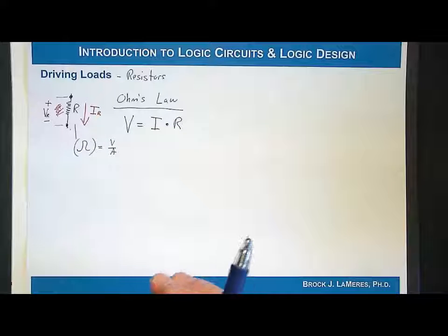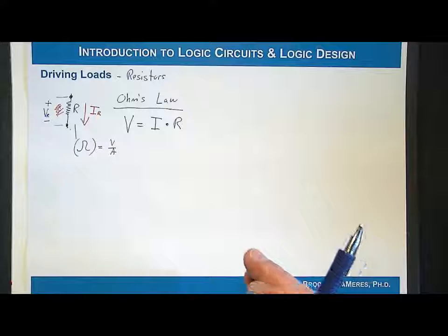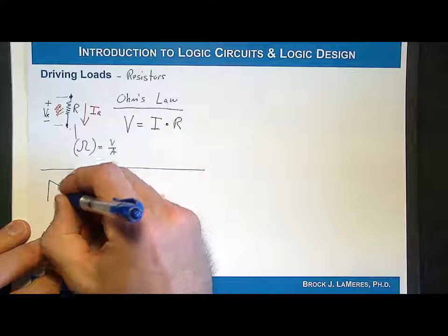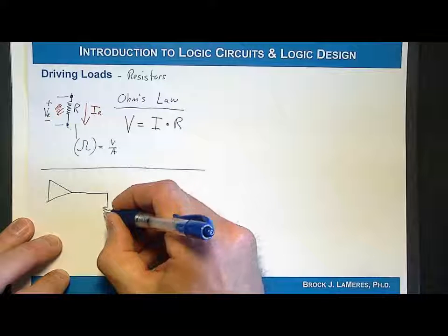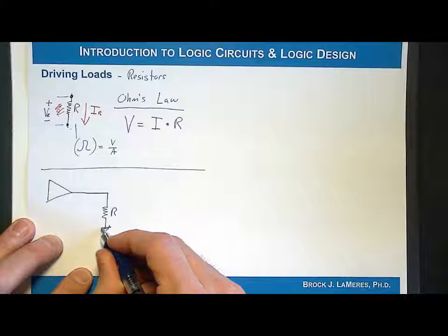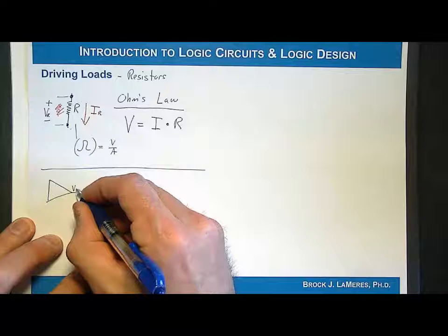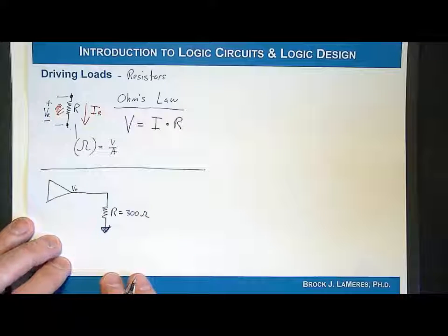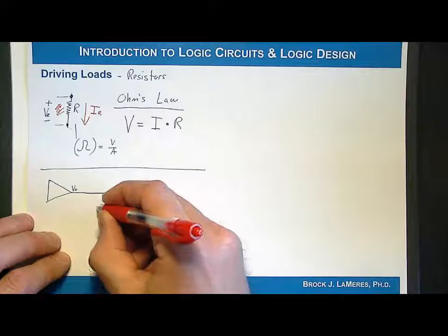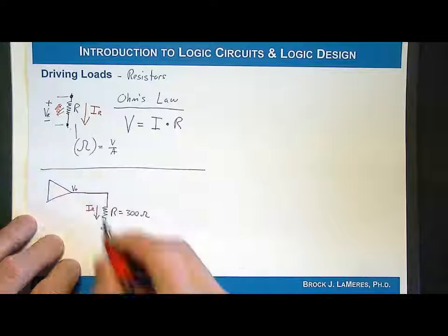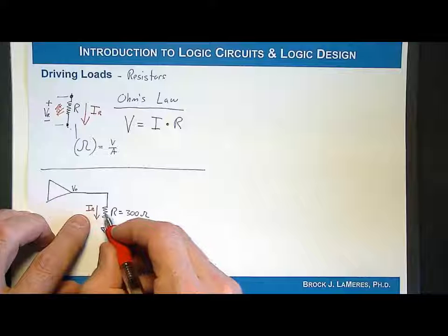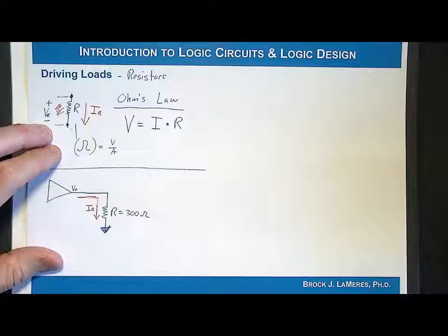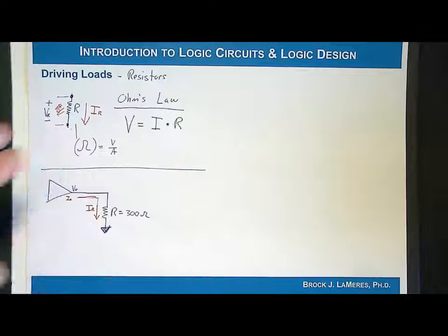Let's look at driving a resistor configured as a pull-down. This would be a situation where we use a digital gate as a buffer driving a resistor — I call it a pull-down because it is connected to ground. The output voltage of the gate goes across a resistance of 300 Ohms. We care about the current through the resistor because that current is the load, and it is coming from the transmitter, so we must not violate any maximum current specifications.